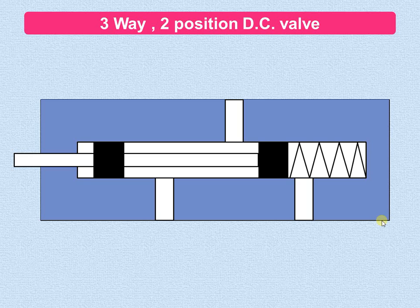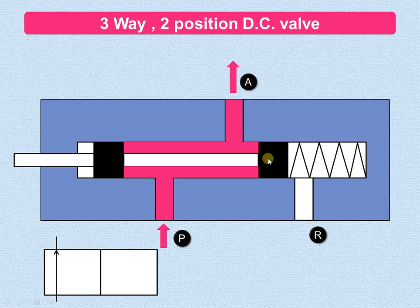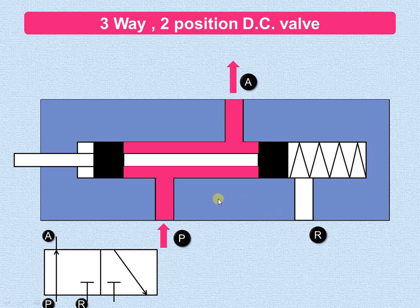Let us now understand the working of the three-way, two-position direction control valve. As you can see, the flow will take place from port P to port A. For this particular position of the spool, which is spring controlled, the reservoir port R is blocked because of the position of this spool. That is indicated on the symbol — the flow takes place from P to A, as indicated by this arrow, whereas the reservoir port R is blocked, shown by the block position.